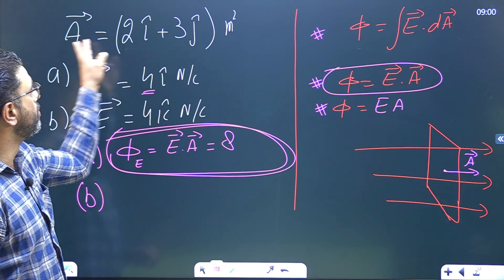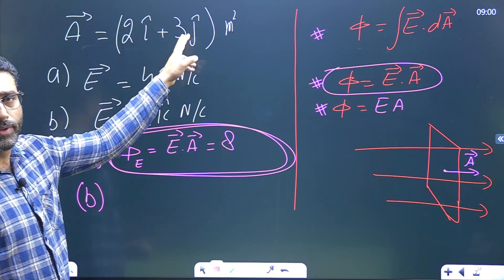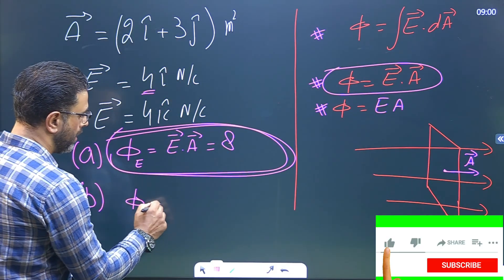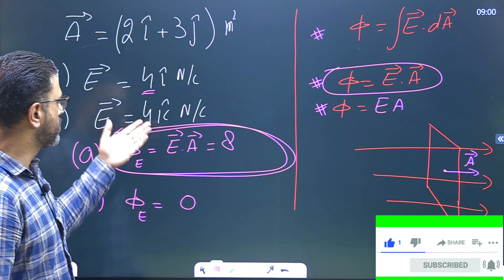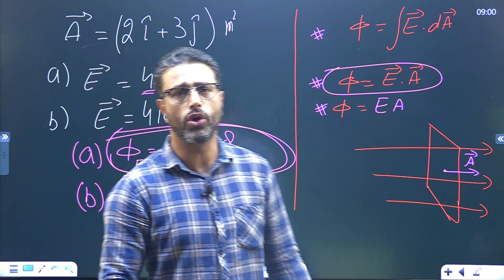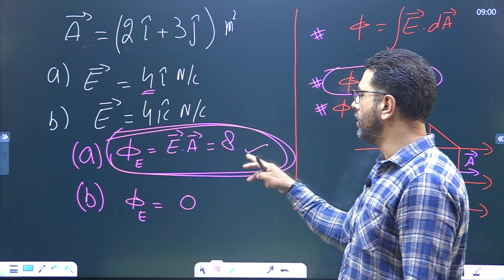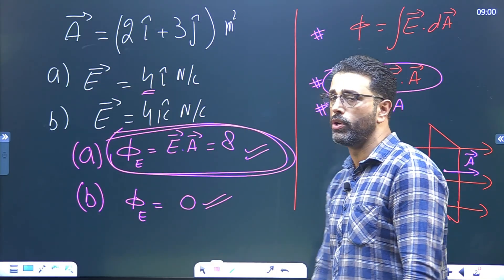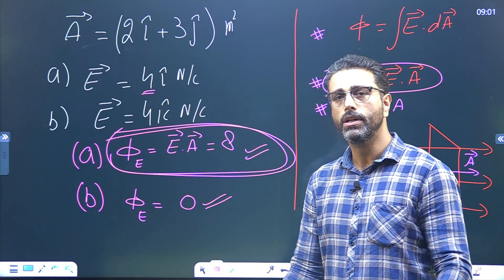For part B, the electric field is 4k, which is the z-component only. The area vector A equals 2i plus 3j has no z-component. So the dot product is simply zero. The electric flux in this case is 0. In summary: part A flux is 8 units, part B flux is 0.